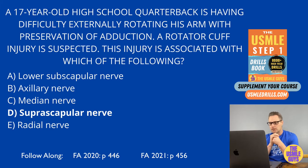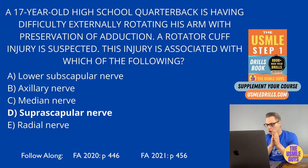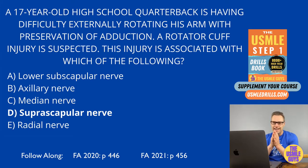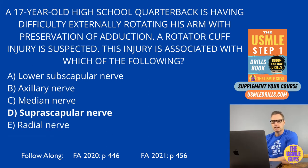The last muscle in the rotator cuff is the subscapularis. This is innervated by the upper and lower subscapular nerves, and it is responsible for internal rotation and arm adduction.